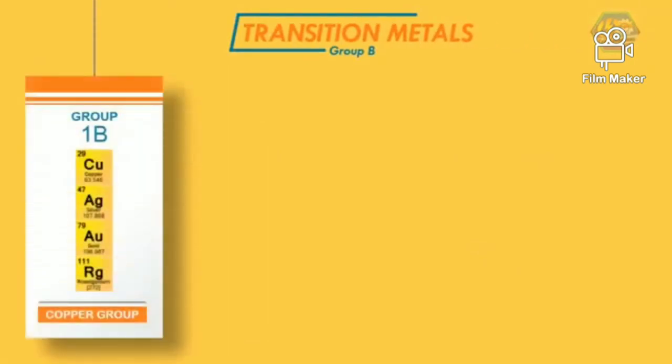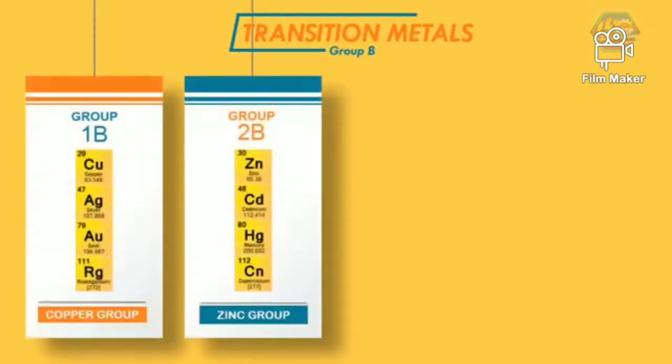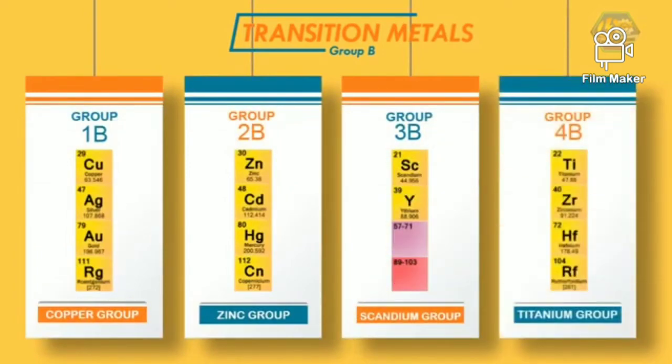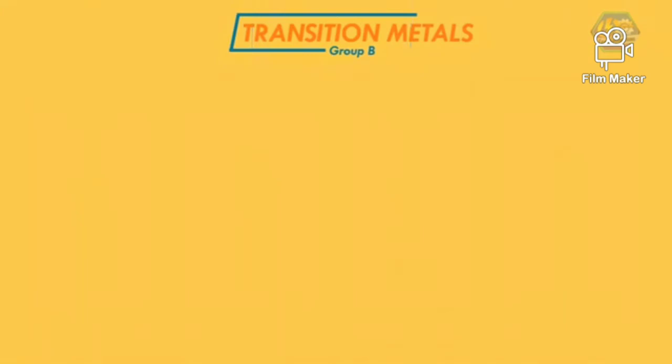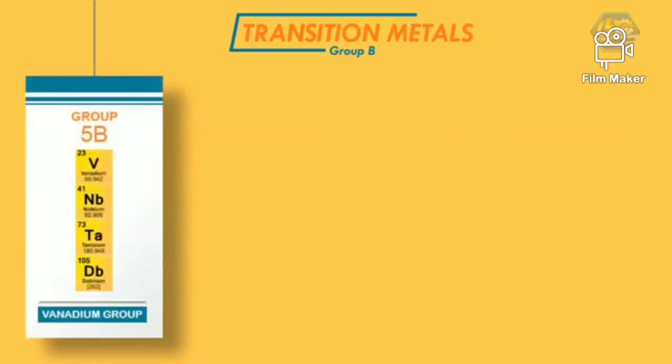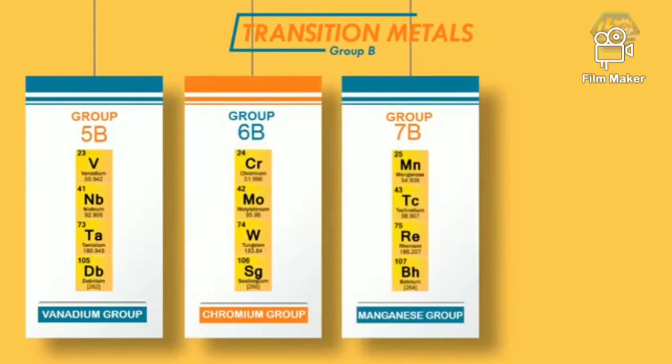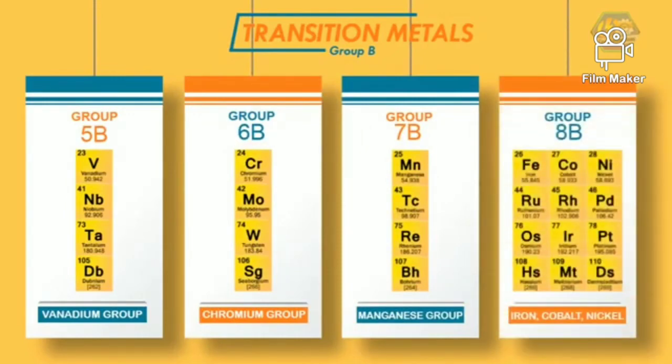For groups B, they are called transition metals from group 1B copper group, 2B zinc group, 3B scandium group, 4B titanium group, 5B vanadium group, 6B chromium group, 7B manganese group, and 8B composed of iron group, cobalt group, and nickel group.